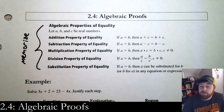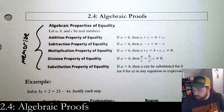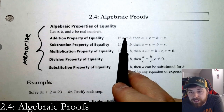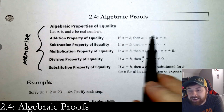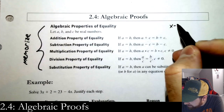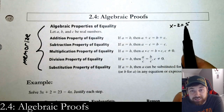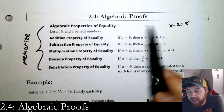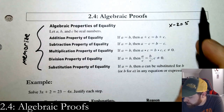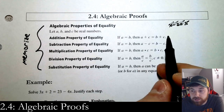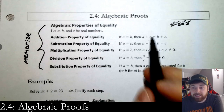So the addition property of equality — all that means is that if I have two numbers, if a equals b, then I can add c to both sides. That's like when I do x minus 2 equals 5, what I do to both sides is add 2. I can do that because of the addition property of equality — I'm allowed to add the same thing to both sides.